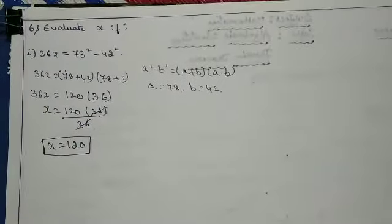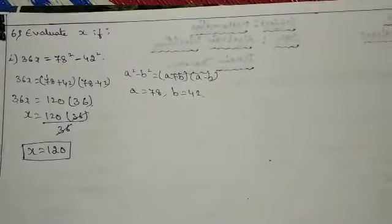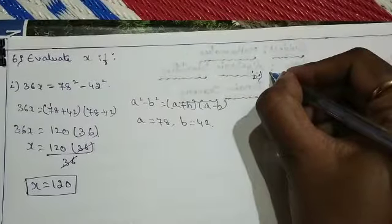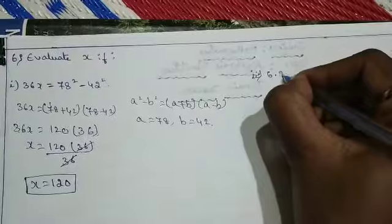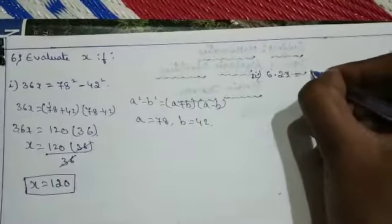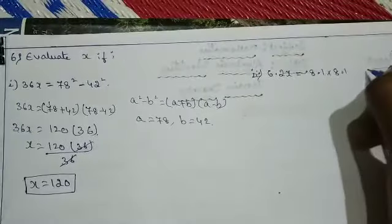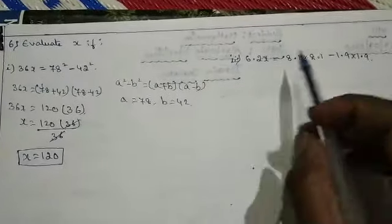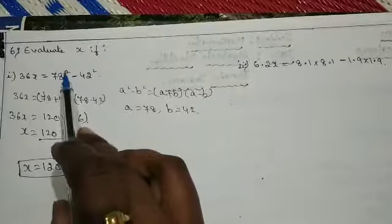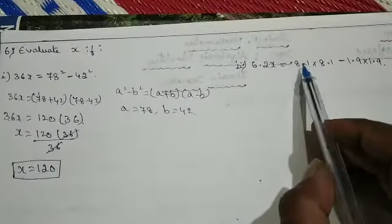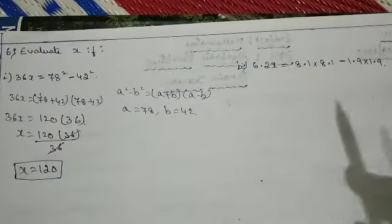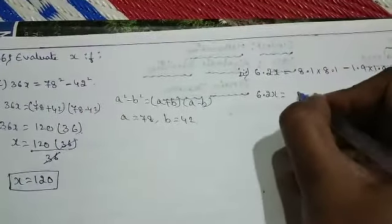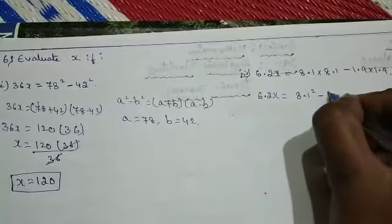This main is very important for the examination — they last for 3 marks or 4 marks. Now the second question in the same main: 6.2x equals 8.1 into 8.1 minus 1.9 into 1.9. What is the difference between the first and second question? Here the numbers are repeated by themselves, which is nothing but a square of a number. So 6.2x equals 8.1 square minus 1.9 square.